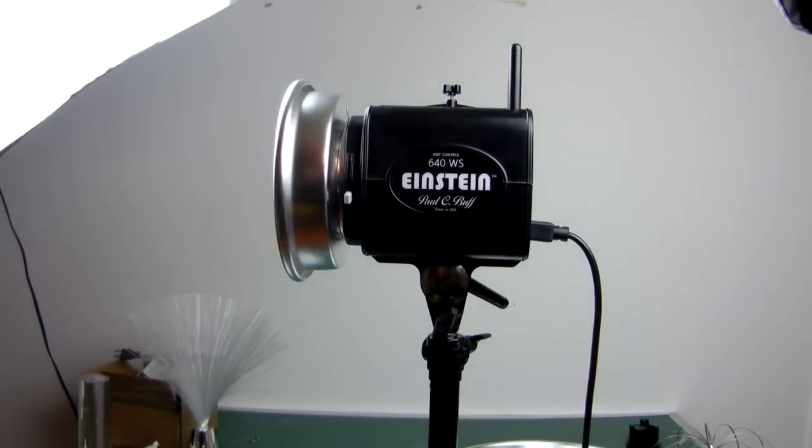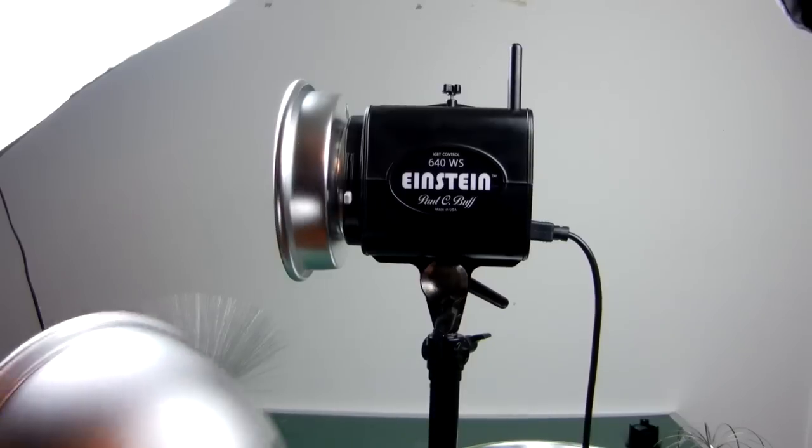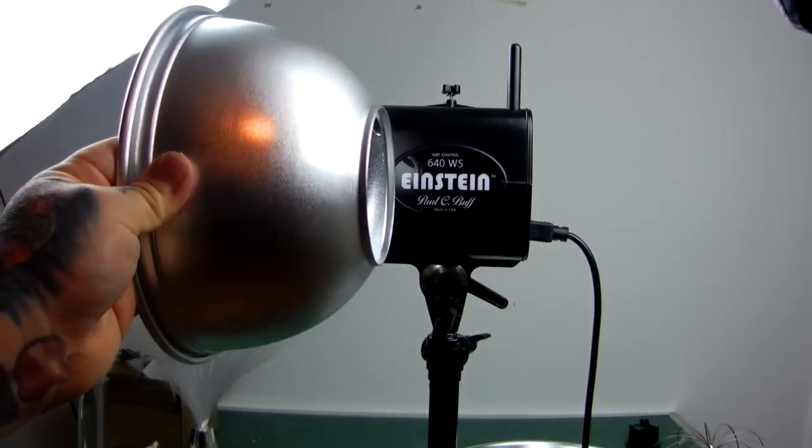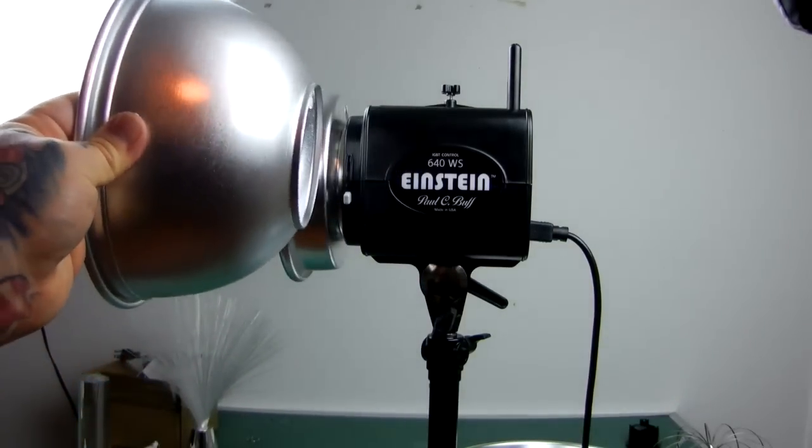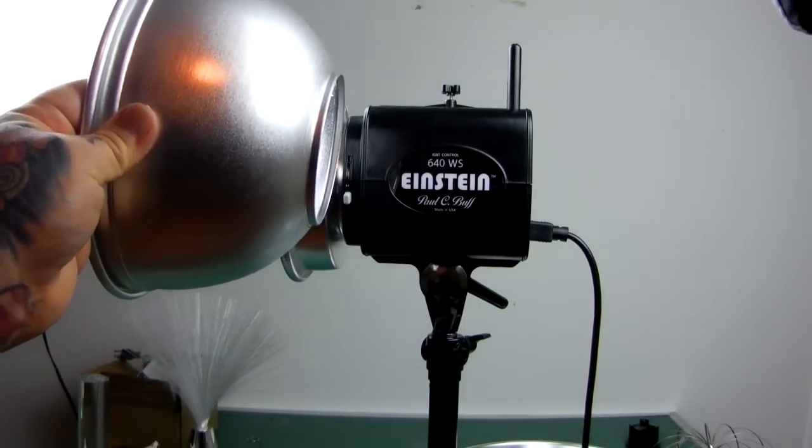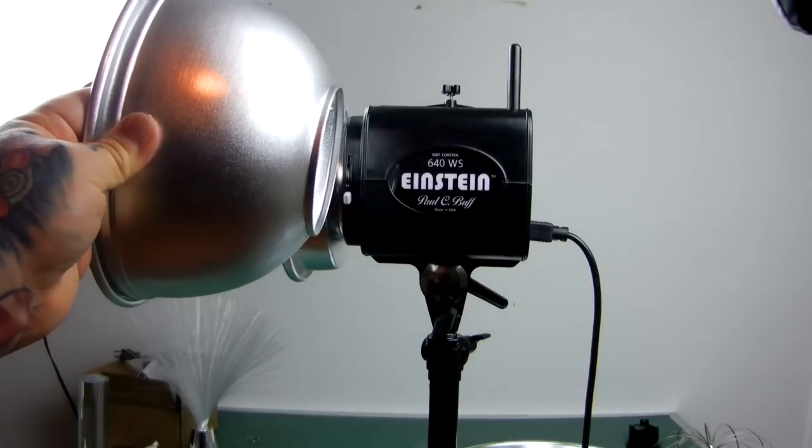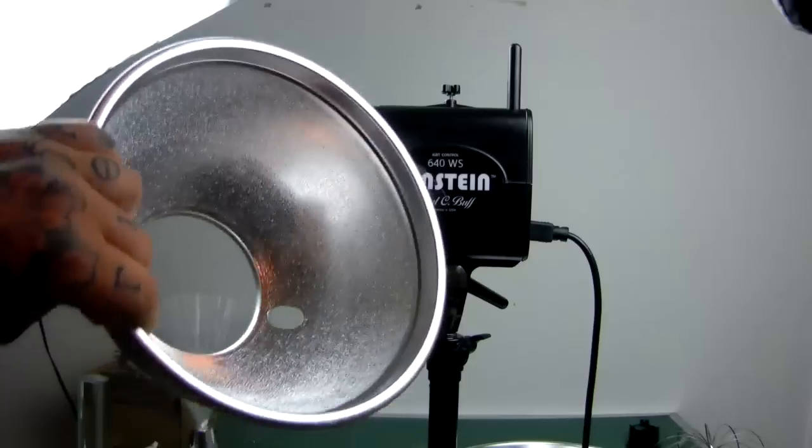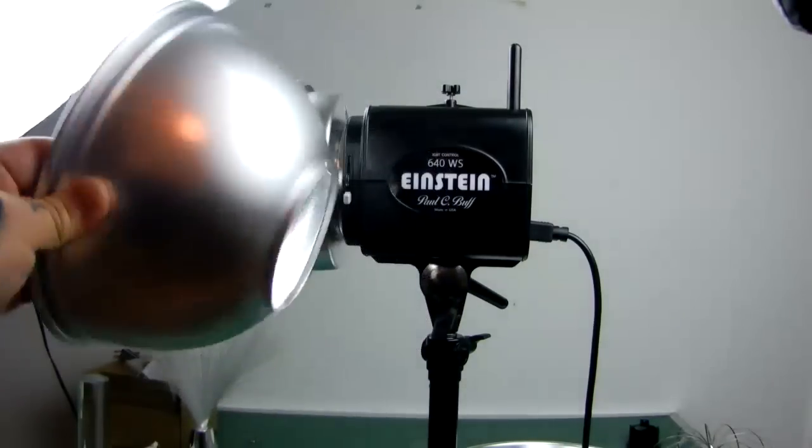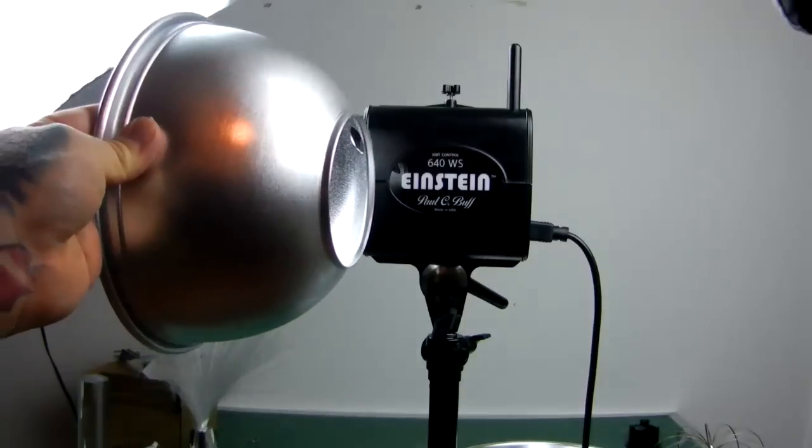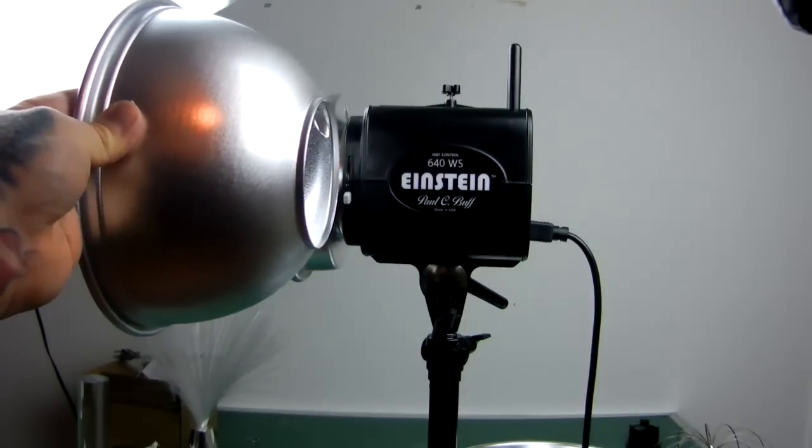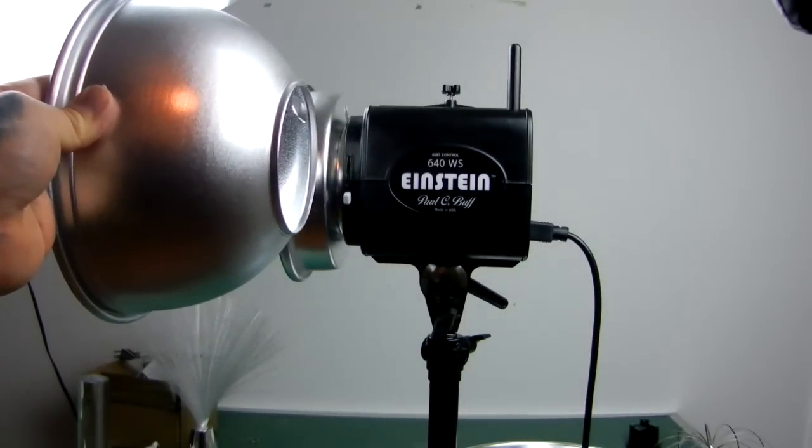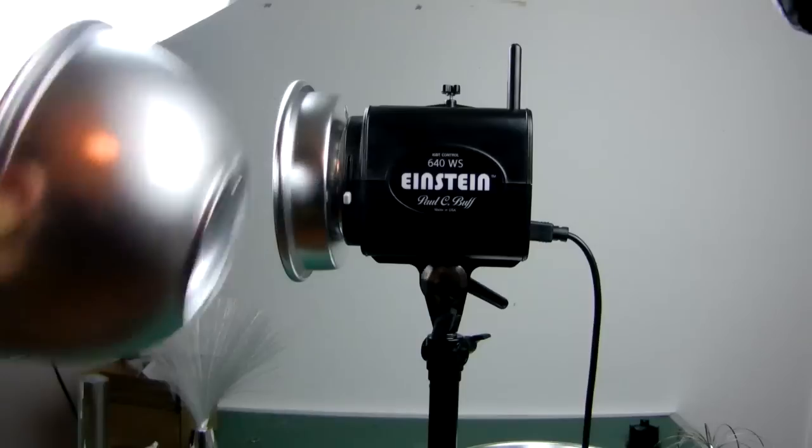The first, the most important reflector dish to have is right here. Now, this is a 45 degree angle dish by Paul C. Buff. It is the 8.5HOR. It's a high output reflector with 45 degrees narrow beam. Inside is a mottled surface like this. And this beats out and is recommended over the 7 inch, 80 degree coverage, wide angle dish reflector.